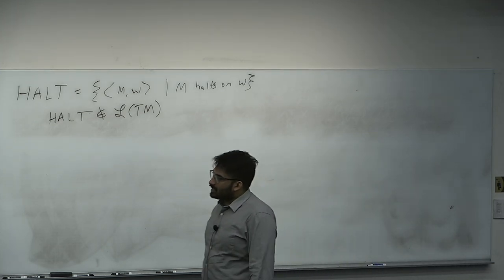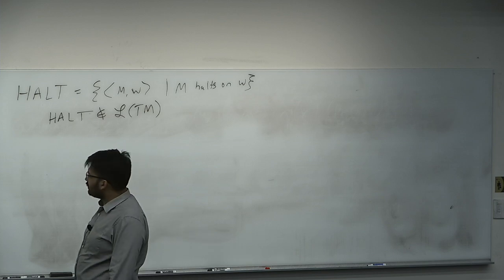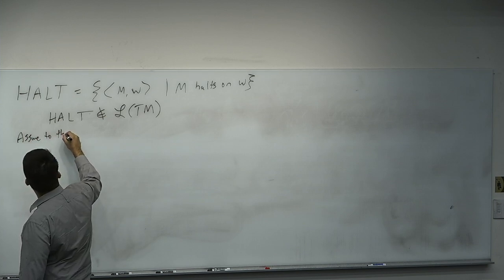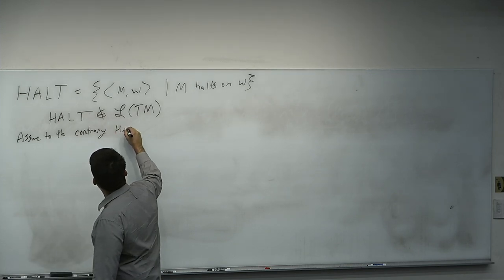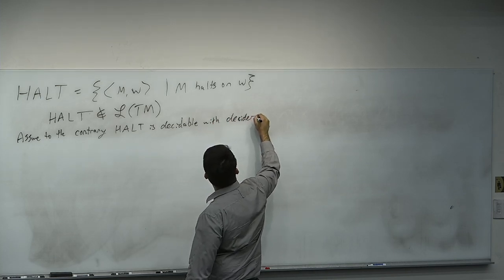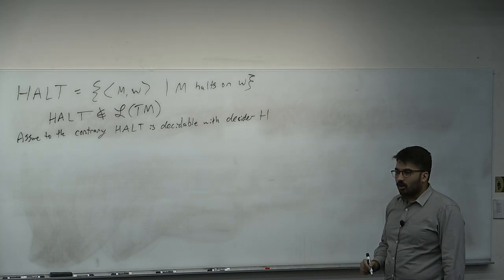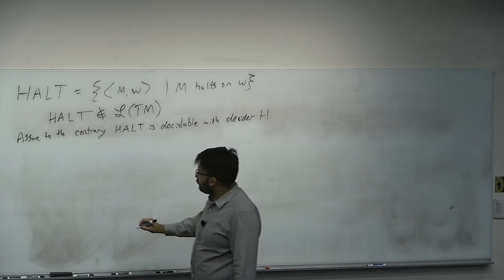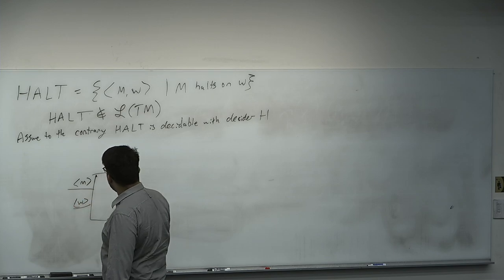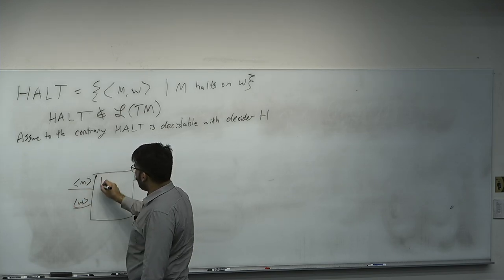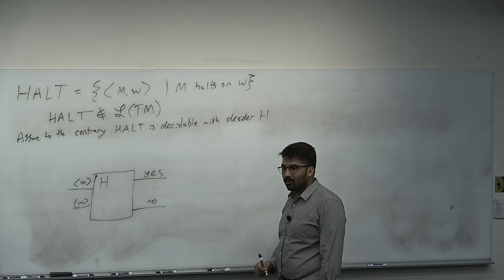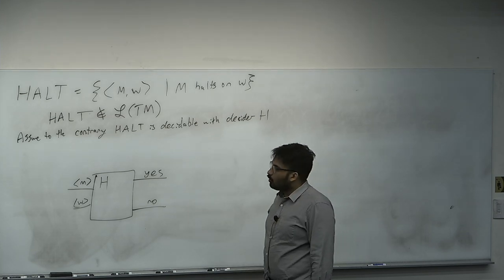How does every proof like this go? These kinds of proofs are usually proofs by contradiction — how would you prove the non-existence of something constructively? Assume to the contrary: HALT is decidable with decider H. Assume to the contrary HALT is decidable and has a decider H. So there exists an algorithm H which takes as input the code of a machine and a word and outputs yes or no. We will represent HALT as a block diagram. Assuming H exists, H decides HALT — this is a program that always halts on all of its inputs. We will construct the following program D.